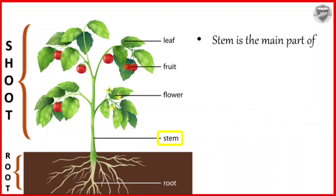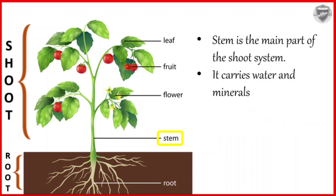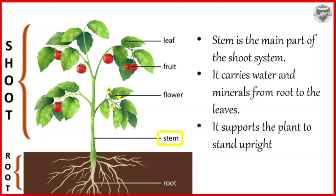Next is stem. Stem is the main part of the shoot system. It carries water and minerals from the root to the leaves. It supports the plant to stand upright.